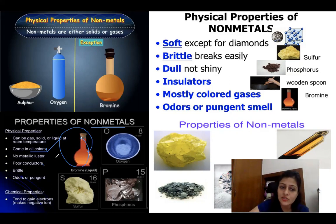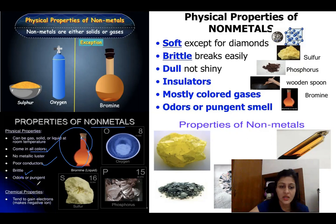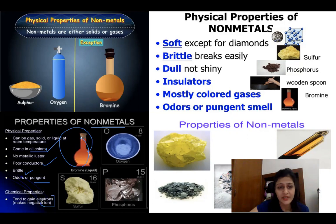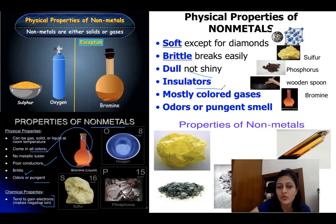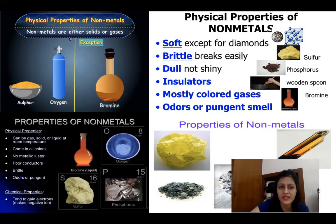Non-metals are poor conductors of electricity. They are brittle, easily melt, and their tensile strength is not strong. Some are of very pungent smell. They are electronegative elements, dull in appearance — not shiny — and are insulators, bad conductors of heat and electricity, and pungent smelling. These are all the physical properties which non-metals possess.